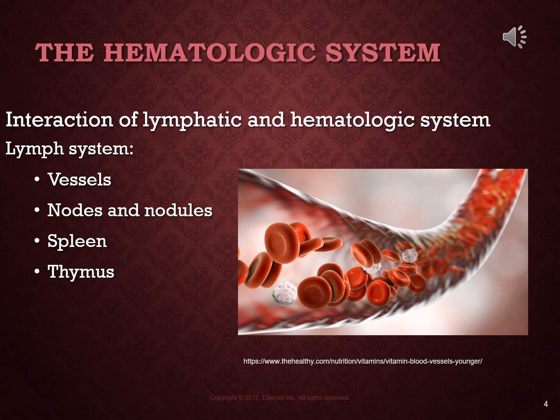Lymph nodes are masses of lymphatic tissue that run along the vessels throughout the body. Certain collections of lymph nodes form chains — including cervical, axillary, and inguinal — which are closest to the surface and can be felt when enlarged. These lymph nodes house lymphocytes and macrophages, which can be sent out into the body to fight infections or produce an inflammatory response when needed.